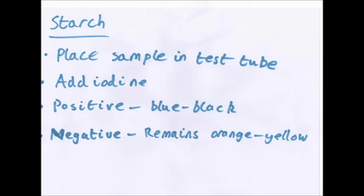So, starch: place sample in a test tube, add iodine. If it's a positive test, the solution will turn blue-black. If it's negative, it remains orange-yellow.